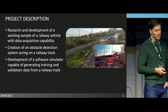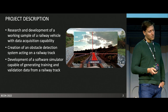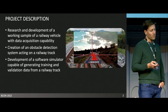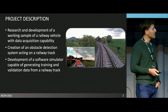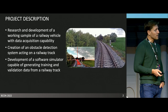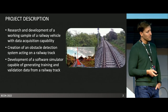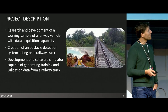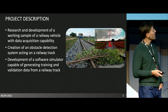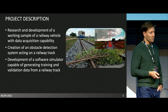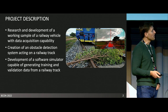The software simulator is part of a bigger project that has three main activities. The first is development of a working sample of a railway vehicle that would be able to capture data during its journey. The second task is creation of an obstacle detection system that could be used in a real train. The third, but not least, is development of a software simulator capable of generating training and validation data for the obstacle detection system.